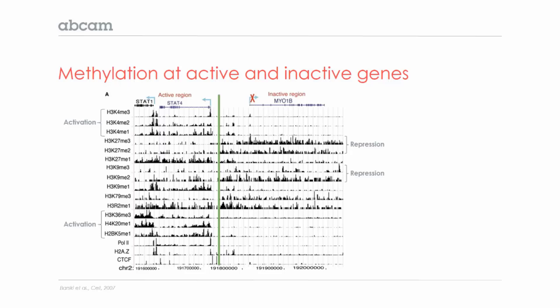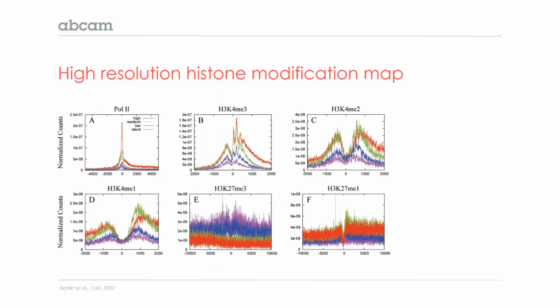Similarly, if you look at marks of repression, such as H3K27 and H3K9 di- and trimethylation, you can see that these modifications are found along the inactive MYO1B gene. To show how powerful ChIP is, I'd like to show this figure from the same publication.